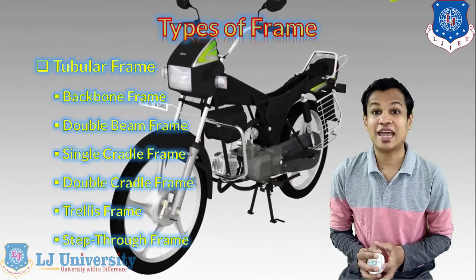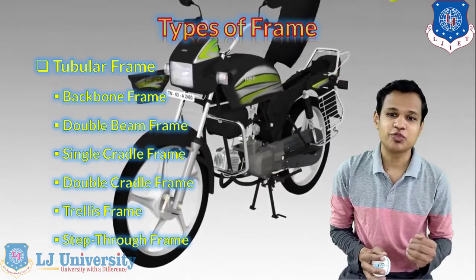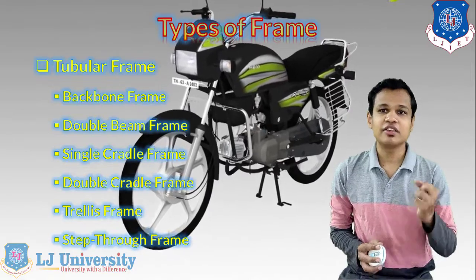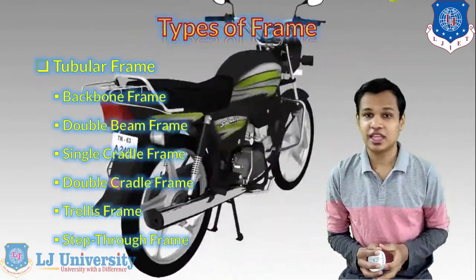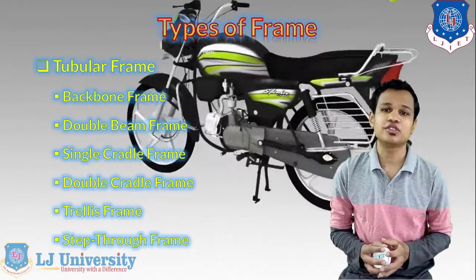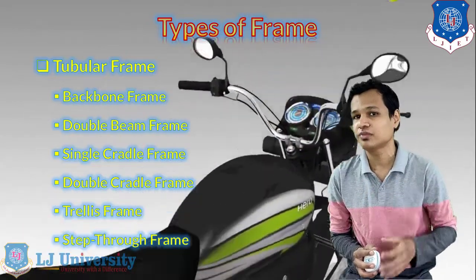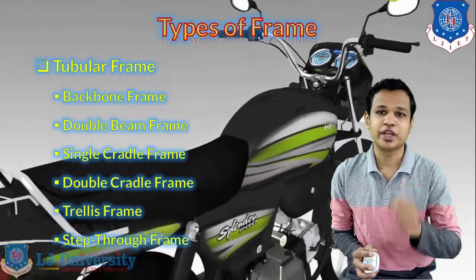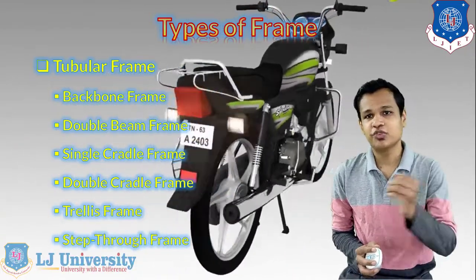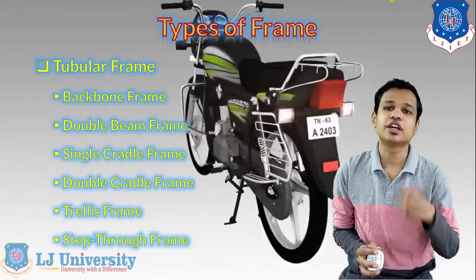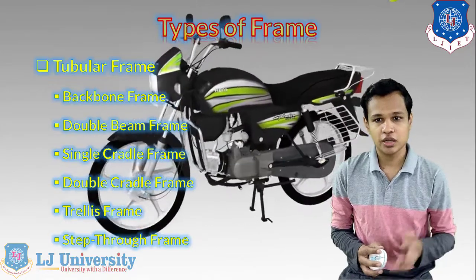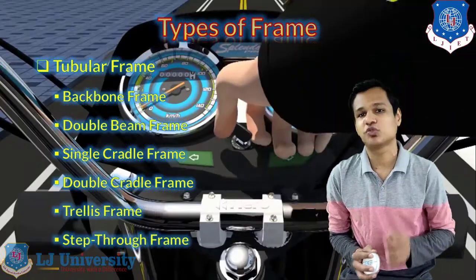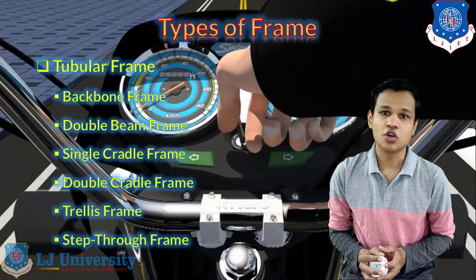The last one is the step-through frame. The step-through frame is also a supportive type of frame. Also, whenever we decide about the tubular frame, there are vehicles that use rectangular box section frames as well as oval box shape frames — different sections according to the requirement of the vehicle. But the most common is the tube section, which is generally used for normal vehicles.